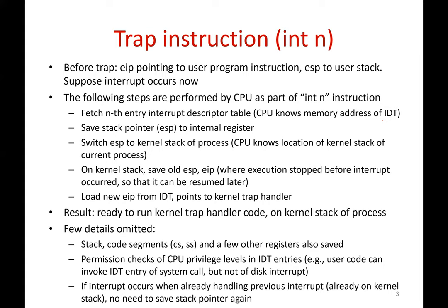So what happens during this trap instruction? Before the trap, your instruction pointer EIP was pointing to some piece of code and your stack pointer ESP was pointing to some location. When the CPU runs INT n, the following actions happen. The CPU knows of a data structure called the Interrupt Descriptor Table or IDT. The CPU knows the memory address of this IDT, will go to that IDT, and fetch the nth entry. That IDT has multiple entries describing what to do for each interrupt, so because this is INT n, it will look up the nth entry.